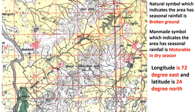The longitude is 72 degrees east and the latitude is 24 degrees north. On the top of the map border, a minute value is written. For example, if it says 30 minutes, you will write that the longitude is 72 degrees 30 minutes east.